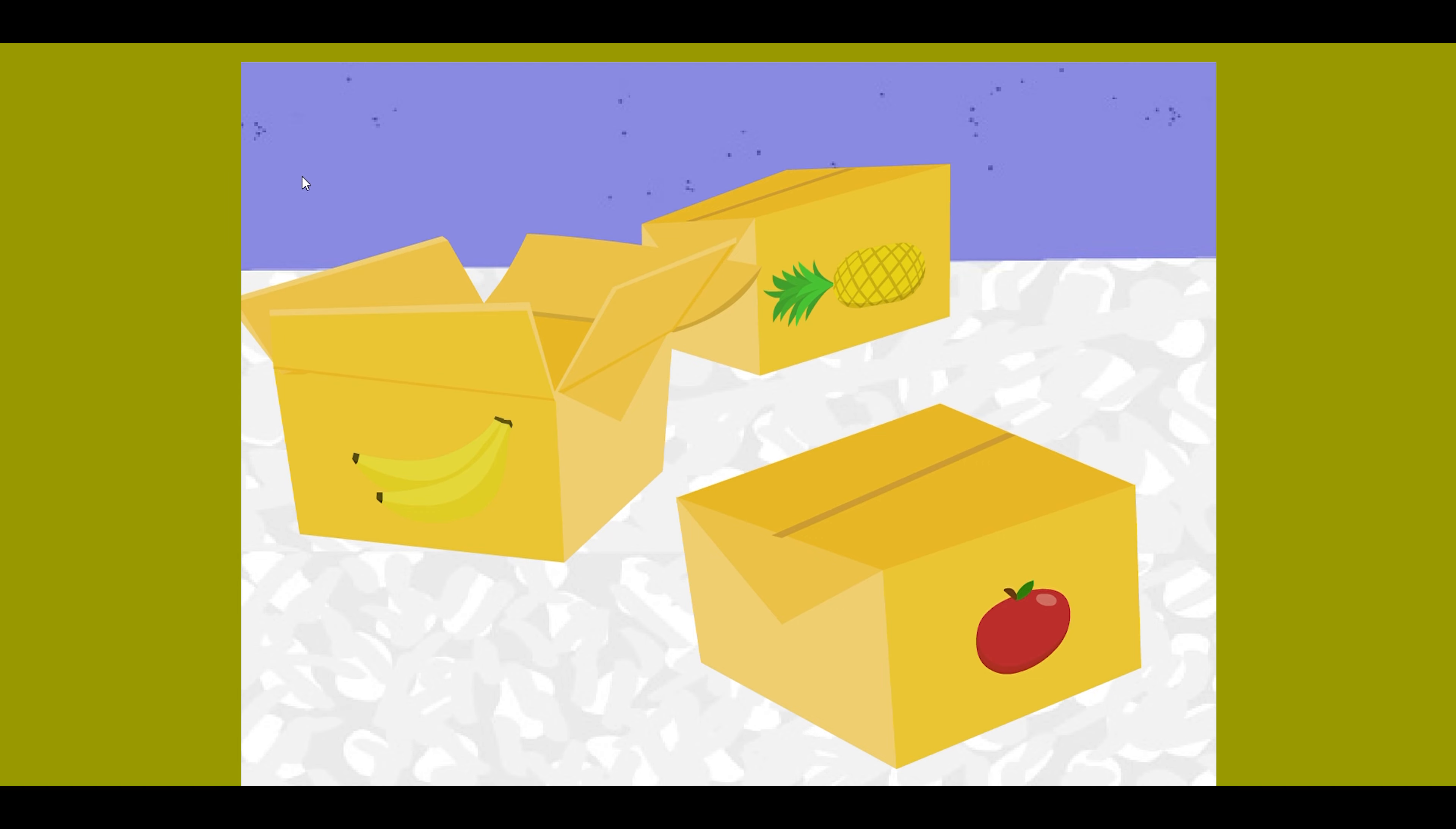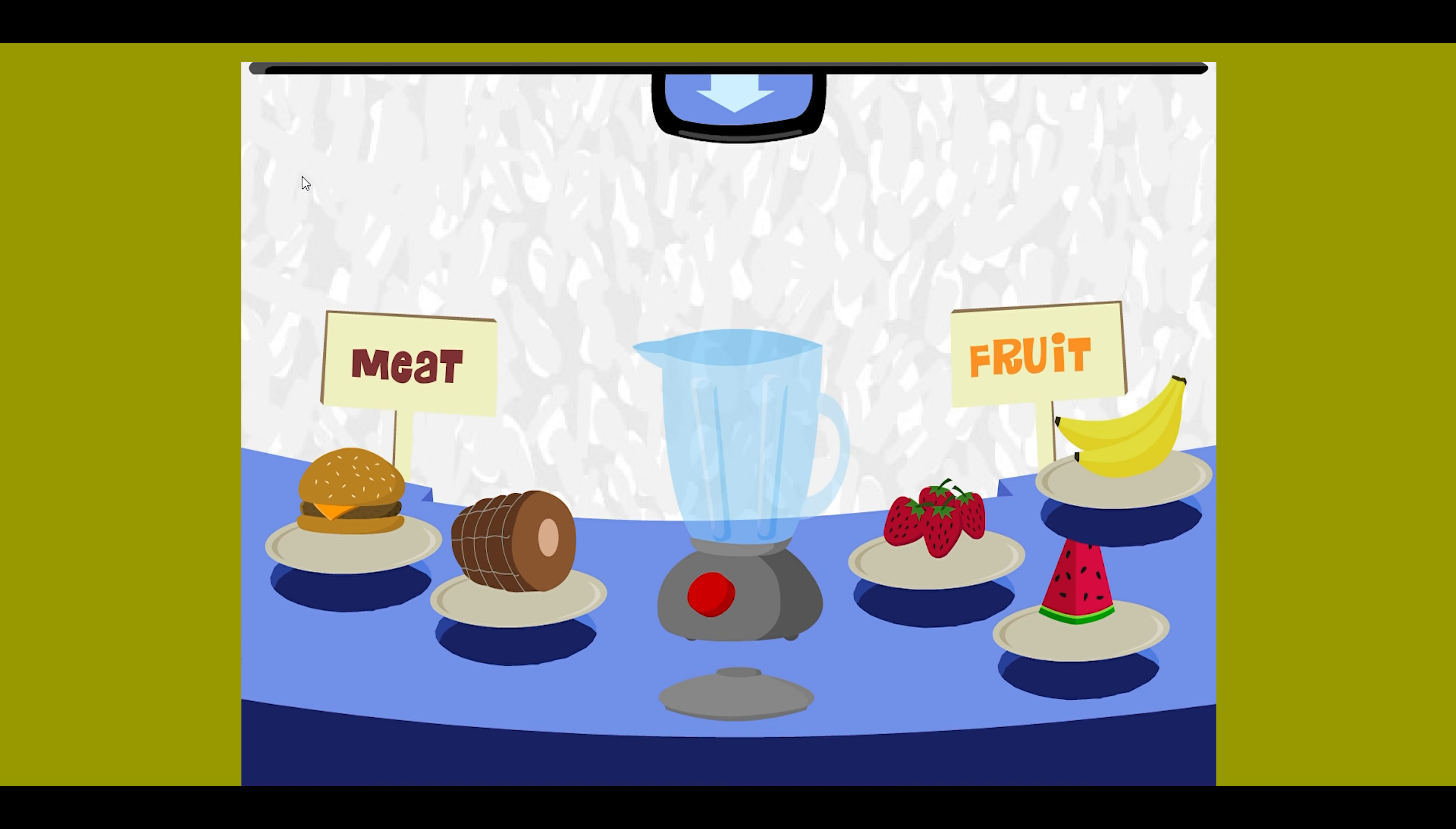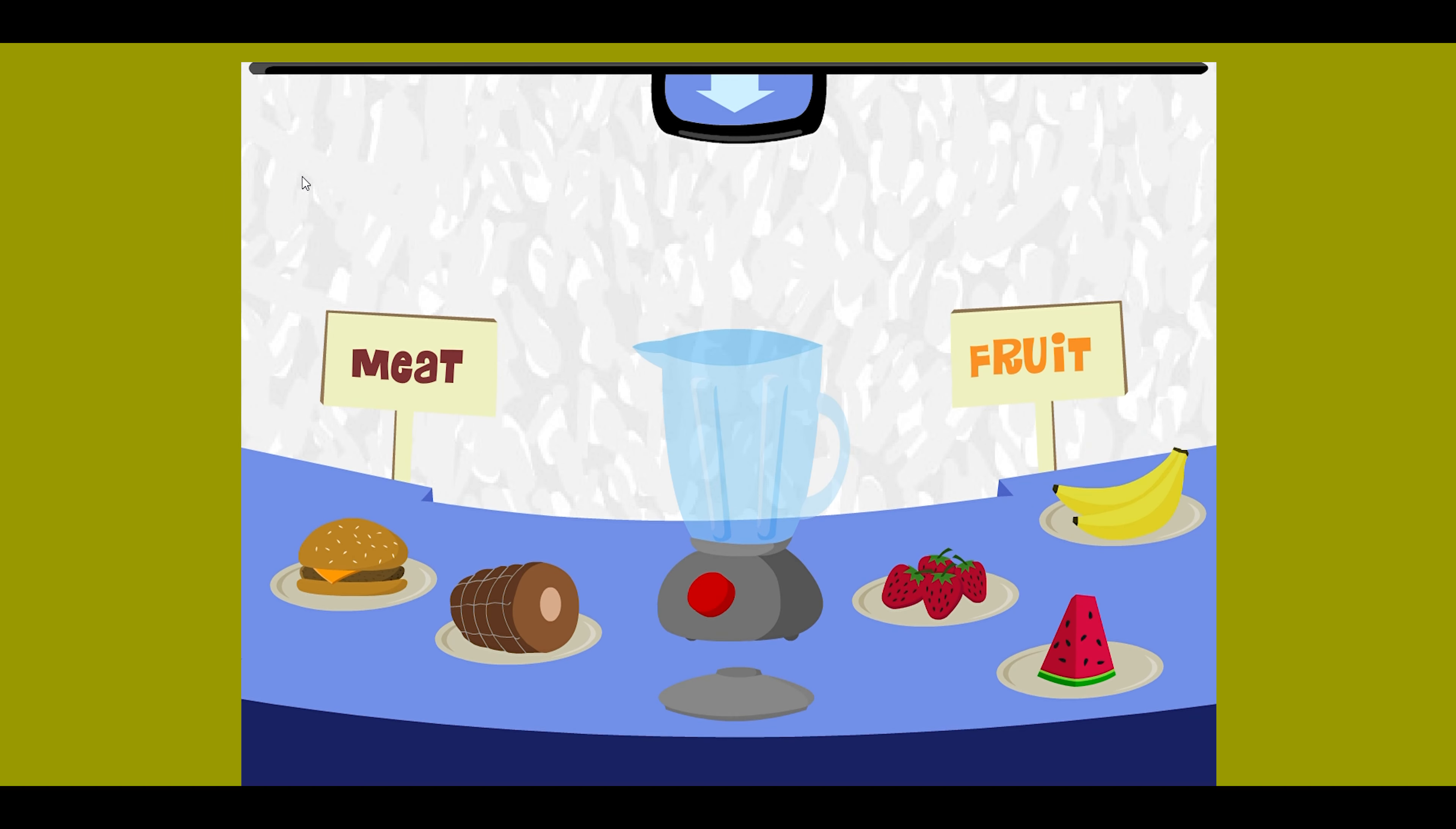Banana! The fruit that comes in a sleeve. Back to the blender! Okay, so now we have two meats and three fruits. Could you help me out again?